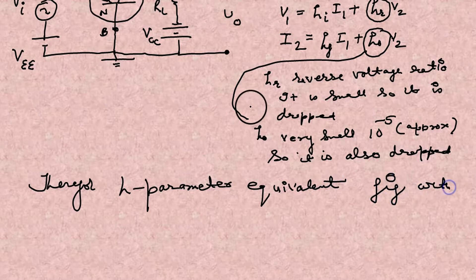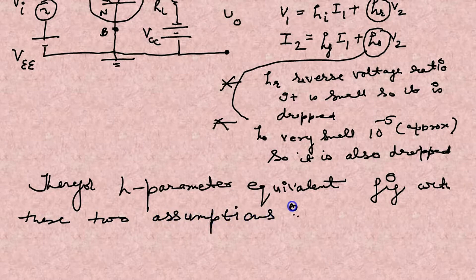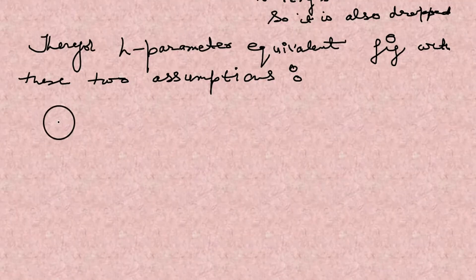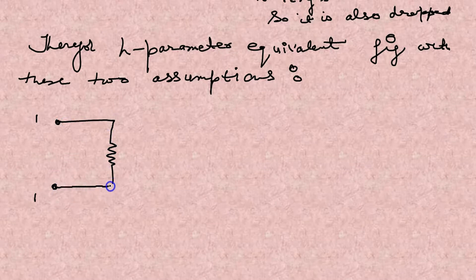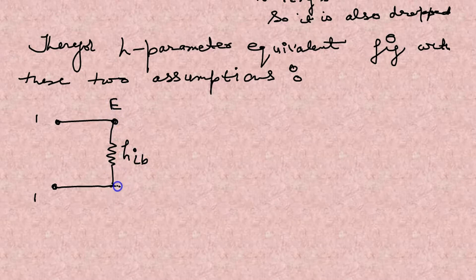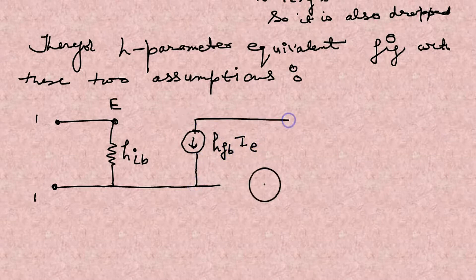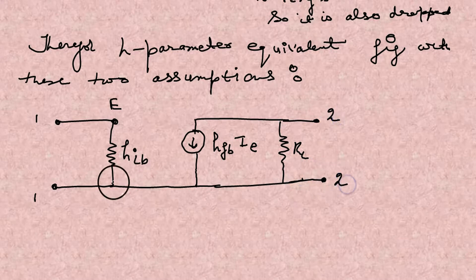Now H-Parameter Equivalent Circuit with the consideration of the above two assumptions or approximations. If we do the approximation, the circuit modifies into like this. And for common base, HIB means for common base, the base is common.